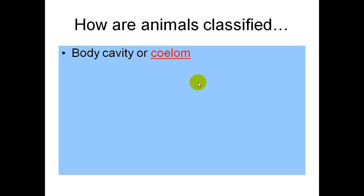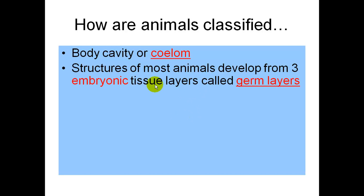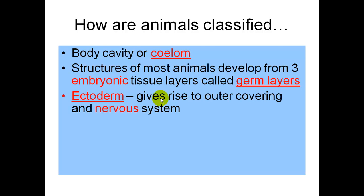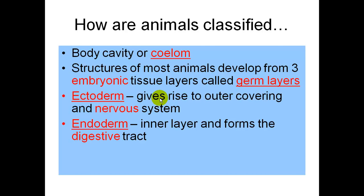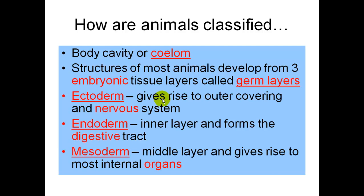Animals are also classified on whether they have a body cavity or not. A body cavity is also called a coelum. Structures of most animals develop from three embryonic tissue layers called germ layers: the ectoderm, which gives rise to the outer covering of the animal and their nervous system; the endoderm, which is the inner layer and forms the digestive tract; and the mesoderm, the middle layer, which gives rise to most organs.